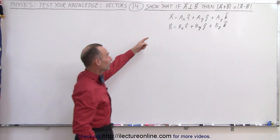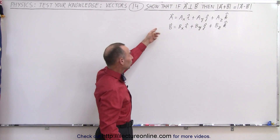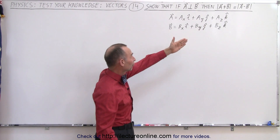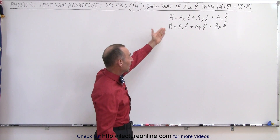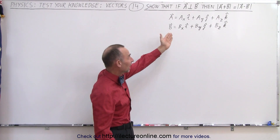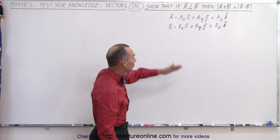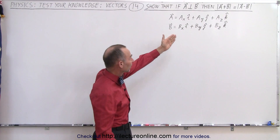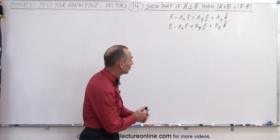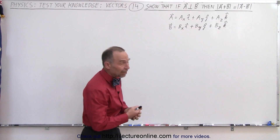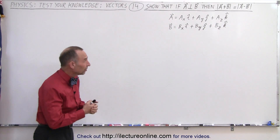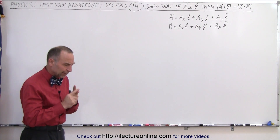We have two vectors A and B in general format. So we have A sub X, A sub Y, A sub Z in the I, J, K directions, and B sub X, B sub Y, B sub Z in the I, J, K directions. But that still doesn't give us a hint of how to go about it.